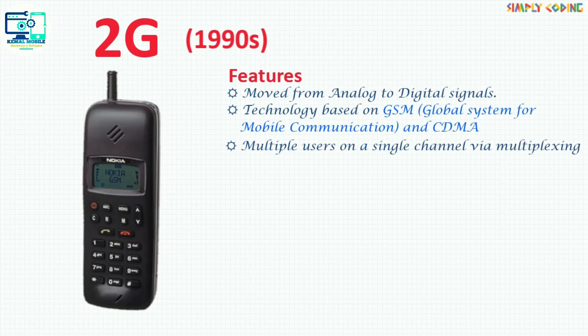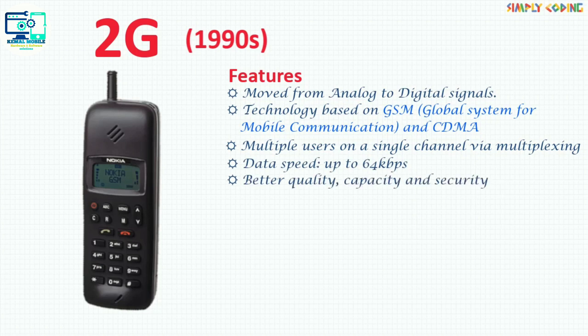2G capabilities were achieved by allowing multiple users on a single channel via multiplexing. In 2G, data speed was up to 64 kbps. It provided better quality and capacity.